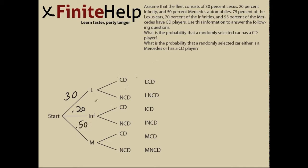Now we need to find the probabilities of each type of car having a CD player. For Lexus, it says that 75% of Lexus cars have a CD player, so 0.75, and there must be 0.25 remaining.